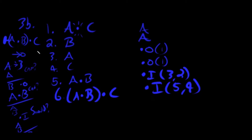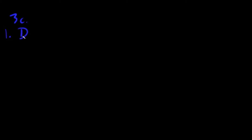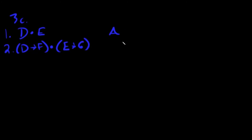Now let's look at 3c. Here's what we've got: line one is 'd dot e' — assumption. Line two is '(d arrow f) dot (e arrow g)' — also an assumption. We're solving for 'f dot g'. We're actually going to use all three rules in this one. The three moves are: arrow-out — can I do it? And-out — can I do it? And and-in — should I do it?